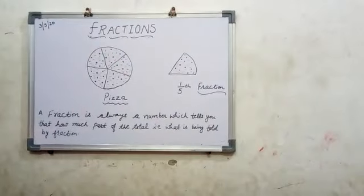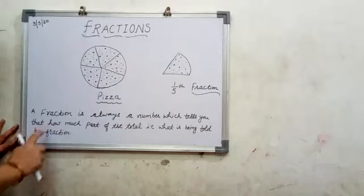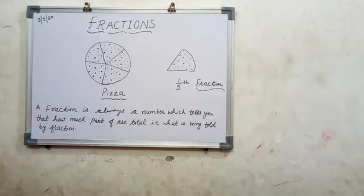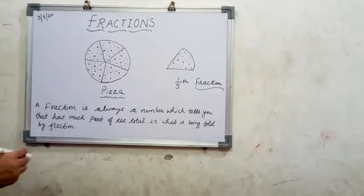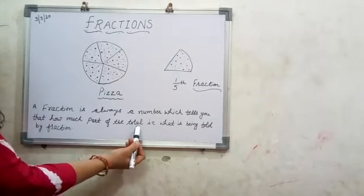So, a fraction is always a number which tells you how much part of the total. That is what is being told by fraction. Here, 1 by 5 tells you that 1 part out of 5 parts.